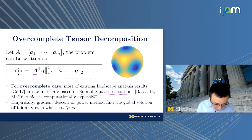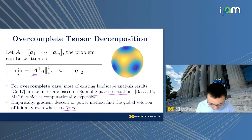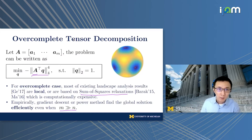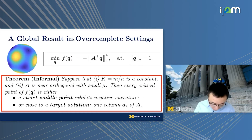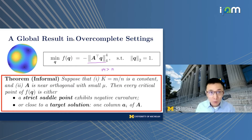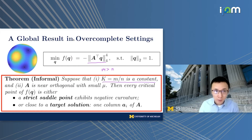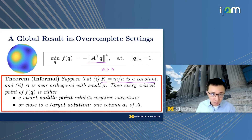Empirically, if you optimize the problem in the over-complete regime where M is larger than N, you can actually find global solutions using gradient ascent/descent or power methods. Our analysis provides results in the over-complete regime where M is larger than N. Our result is a little bit conservative — our over-completeness is only around a constant, meaning the constant over K is larger than 1 but within a constant.